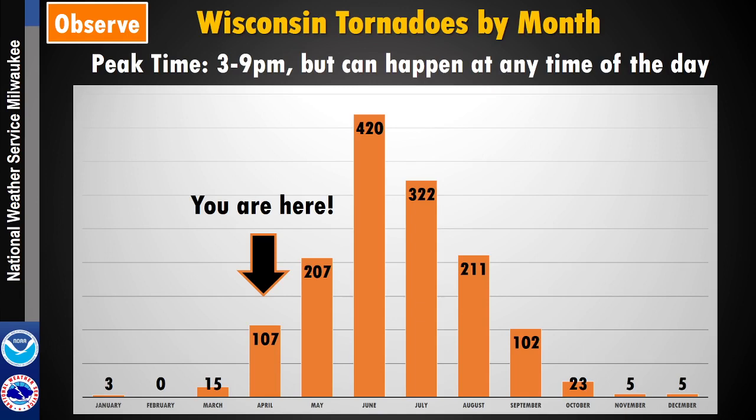Most tornadoes happen in June, but you can get them any time of year if the right weather conditions come together. Peak time for tornadoes is between 3 and 9 o'clock in the evening, but they can happen any time of day. Some of our worst tornadoes are the ones that occur overnight when people are sleeping or aren't paying attention to the weather as much as they might during daylight.